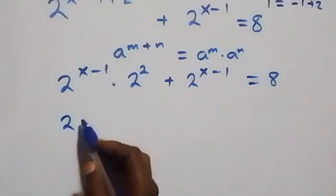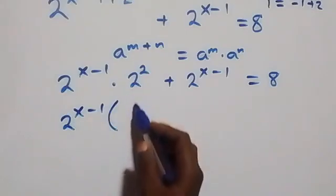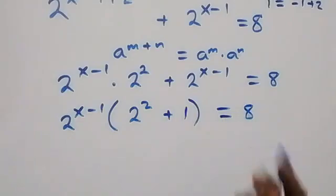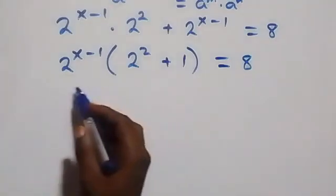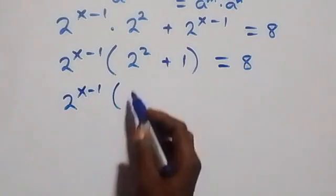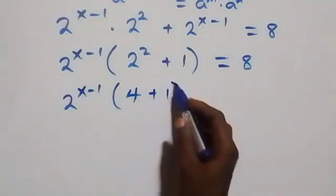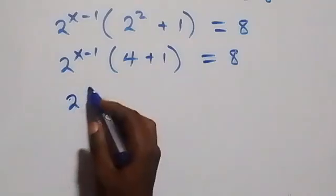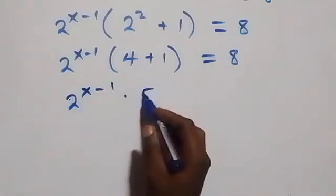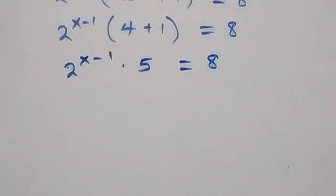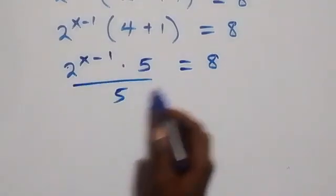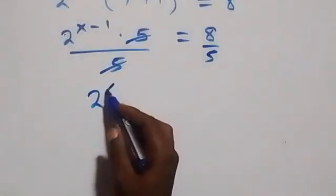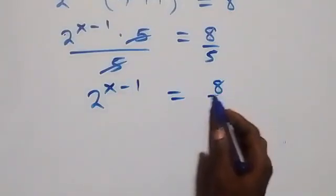Let's factor that out. This gives us two raised to power x minus one, times bracket two squared plus one, equals eight. Simplifying further: two raised to power x minus one times bracket four plus one equals eight, so two raised to power x minus one times five equals eight. We then divide both sides by five, and we have two raised to power x minus one equals eight over five.